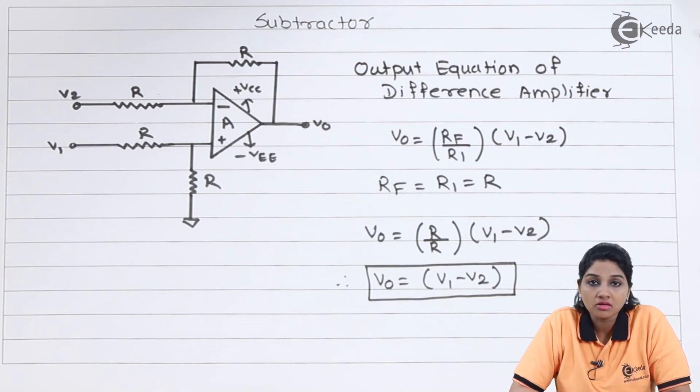So this is what about the subtractor circuit, which is modified or advanced version of the circuit called difference amplifier, in which value of all the resistors remains same and V0 equals V1 minus V2.